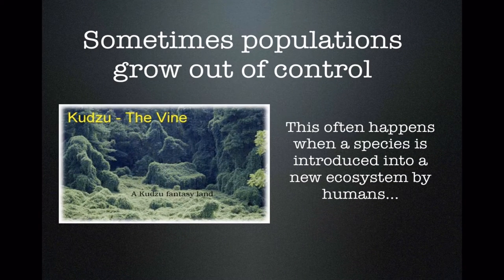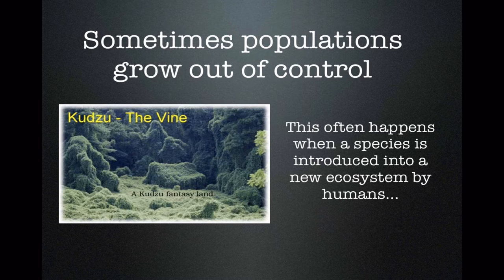Sometimes populations can grow out of control. This is particularly common when you take a species from its natural location and move it somewhere it has never been before. A couple of famous examples: the first one is a plant. Kudzu is a vine from Asia brought to the United States in the 1930s. It has no herbivore, no caterpillar, no bug that eats it here. So once it got going in the United States, it really kind of took over and is now considered a very bad plant pest.